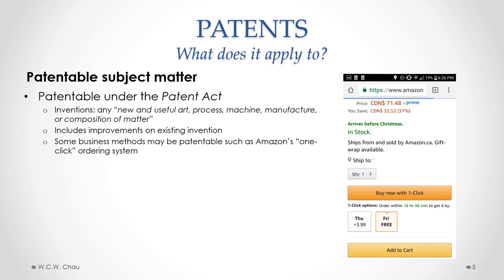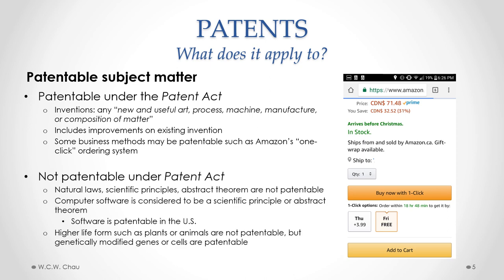It's still highly unclear as to what criteria a business method has to meet in order to be patentable in Canada. What is not patentable under the Patent Act are natural laws, scientific principles, and abstract theorems. For example, Albert Einstein's formula E=MC² is considered to be a natural law or scientific principle and therefore is not patentable. Also in Canada, computer software is not patentable because it is considered to be a scientific principle or abstract theorem.